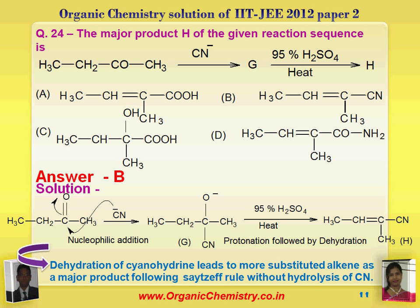The major product H of the given reaction sequence: CN negative attacks over the carbonyl carbon — nucleophilic addition gives a compound which abstracts a proton from sulfuric acid to form a cyanohydrin, which then loses a water molecule. Sulfuric acid acts as a dehydrating agent. There are two possibilities for hydrogen abstraction — hydrogen abstracted from the position that gives more substituted alkyne is preferred, giving the more stable product. Dehydration of cyanohydrin leads to the more substituted alkyne as the major product following Zaitsev's rule. Answer is B.